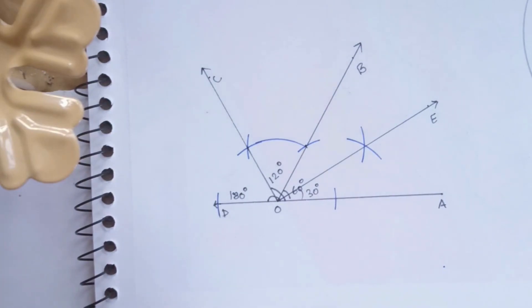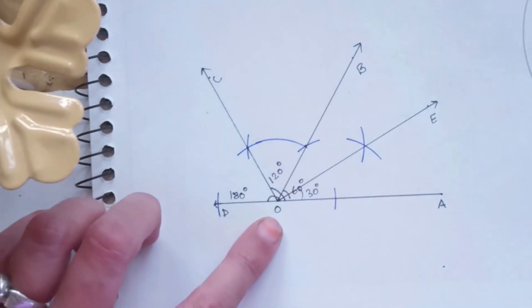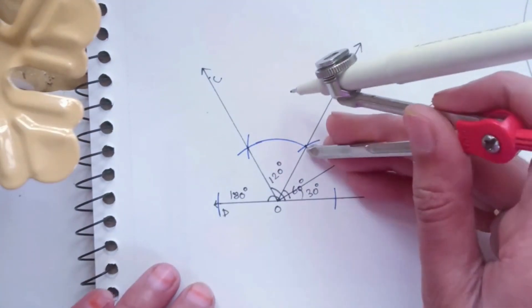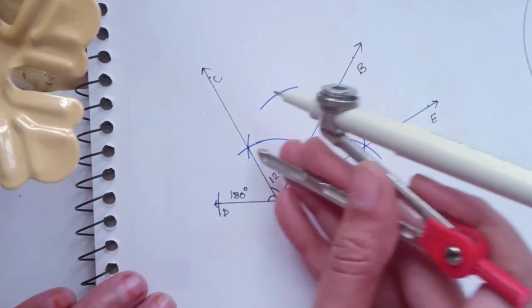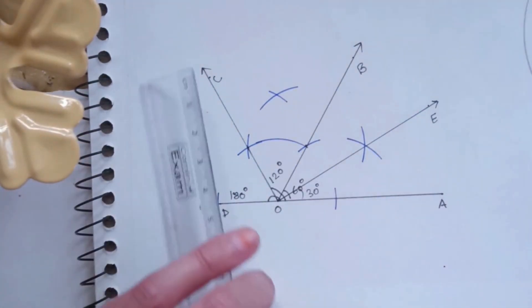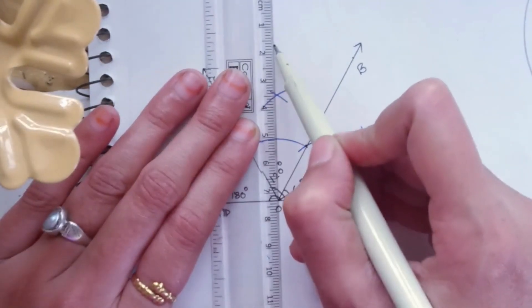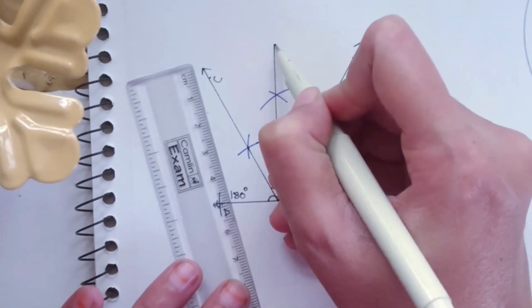Similarly, draw two intersecting arcs between line OB and OC in the same way with the same distance. So after joining this intersecting point with O, we will get our 90 degree angle that will be OF.